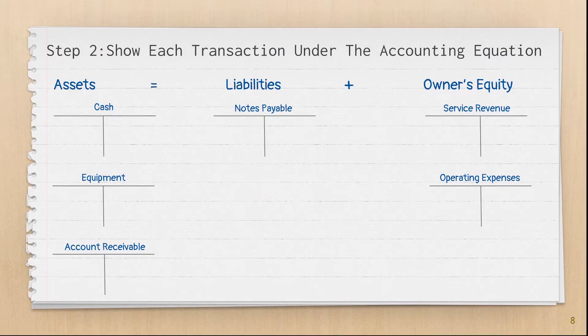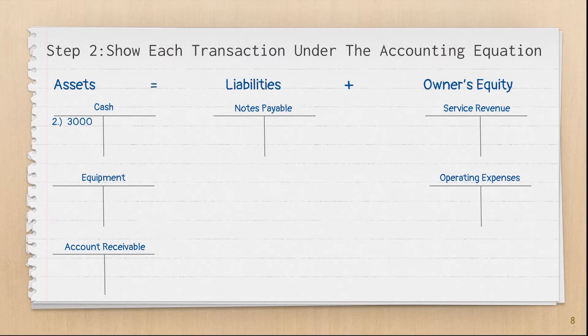In event one, Dakota starts his landscaping business, but no transactions occur, so the accounting equation remains unaffected. In event two, Dakota takes out a note payable for $3,000. Notice how the cash account is debited, causing it to increase because it is an asset, and the notes payable account is credited, causing it to increase because it is a liability.